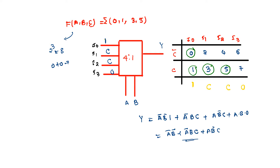This is easy because you would normally do it using a K-map, but this method shows you how to calculate the inputs directly. I hope you understood. Thank you.